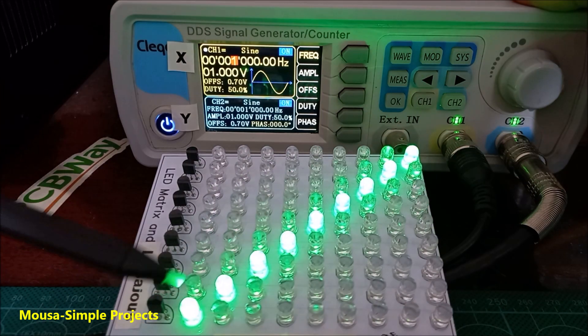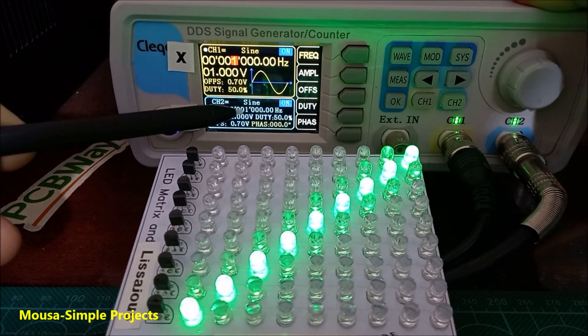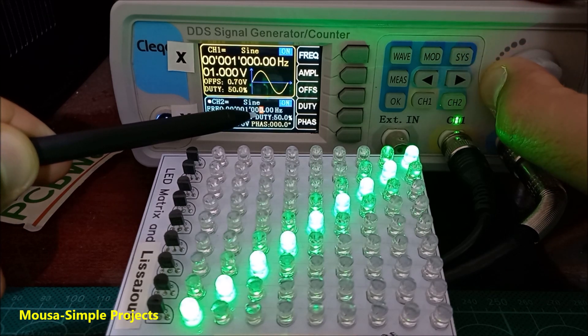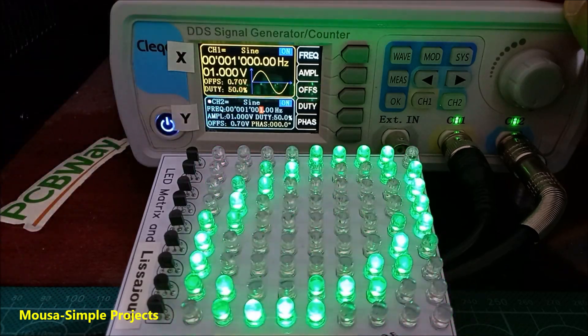At high frequency, we got a straight line with 45 degrees. I set the frequency of both channels at 1 kHz. But see what happens if I add only 1 Hz to one of them. It just makes a beautiful shape that keeps moving.